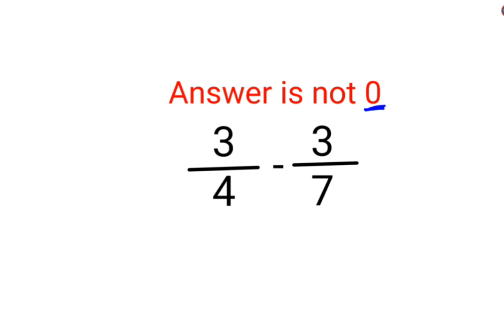So a lot of people think when you have subtraction you can directly do 3 minus 3 and 4 minus 7. Now 0, the numerator is 0, 0 upon anything the answer is just 0.